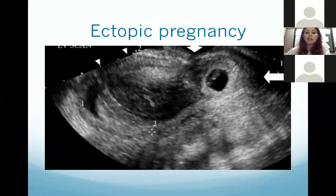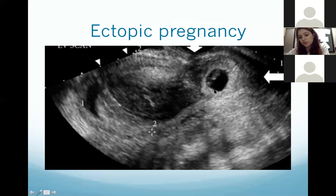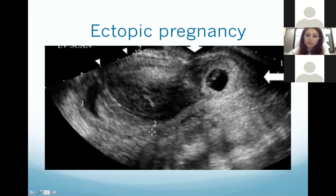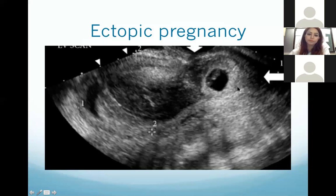This case shows an ectopic pregnancy. This is the uterus; outside the uterus you can see a ring-shaped structure with a small yolk sac and fetal pole in it — this is the ectopic pregnancy. Ectopic pregnancy can be tubal, ovarian, or within the broad ligament. Cases with a thick ring around the gestational sac are usually tubal, representing the edematous tube walls around the gestational sac.